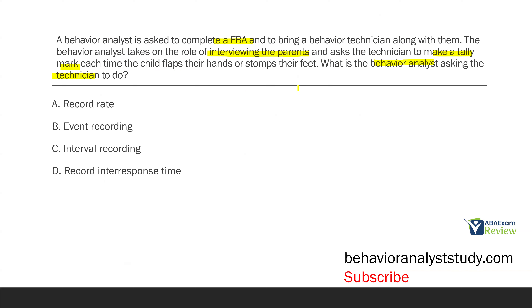That's a good question to ask yourself during measurement questions: am I looking at time or an amount? If I'm making a tally mark each time hand flapping or stomping feet occurs, I'm simply counting how many times these behaviors happen. What type of measurement does the behavior analyst want? Option A is recording rate. Rate does include frequency, but it also needs a time component. We don't have a time component in our question — we're simply looking at tally marks.